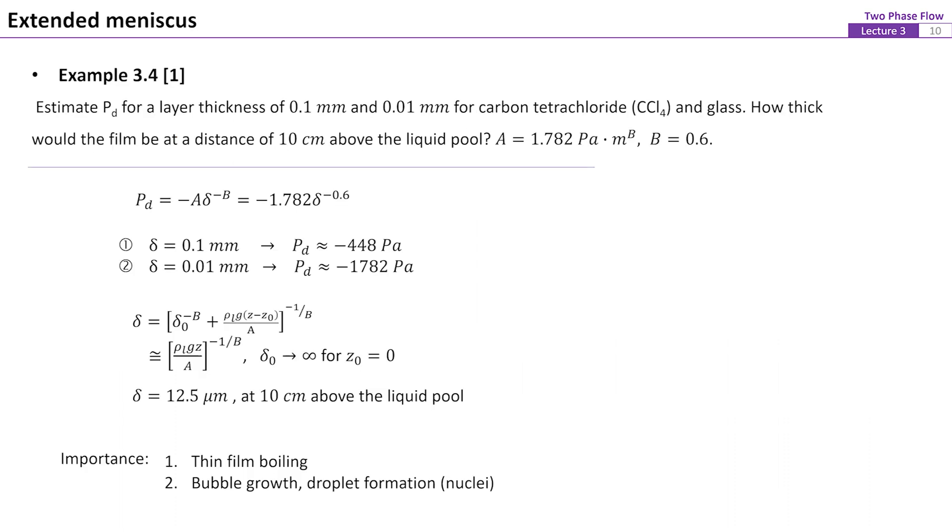To further illustrate the importance and significance of the extended meniscus and disjoining pressure, here we share an example from the textbook. The important conclusions are that the absolute value of disjoining pressure increases significantly with decreasing the liquid film thickness. And the thin liquid film thickness on a vertical plate could be on the order of several tens of microns at a location of 10 centimeter above the surface of the bulk liquid. The disjoining pressure also affects the formation and the growth of liquid droplet and a bubble on the surface of solid in the case of heterogeneous nucleations. This will be discussed in later lectures.